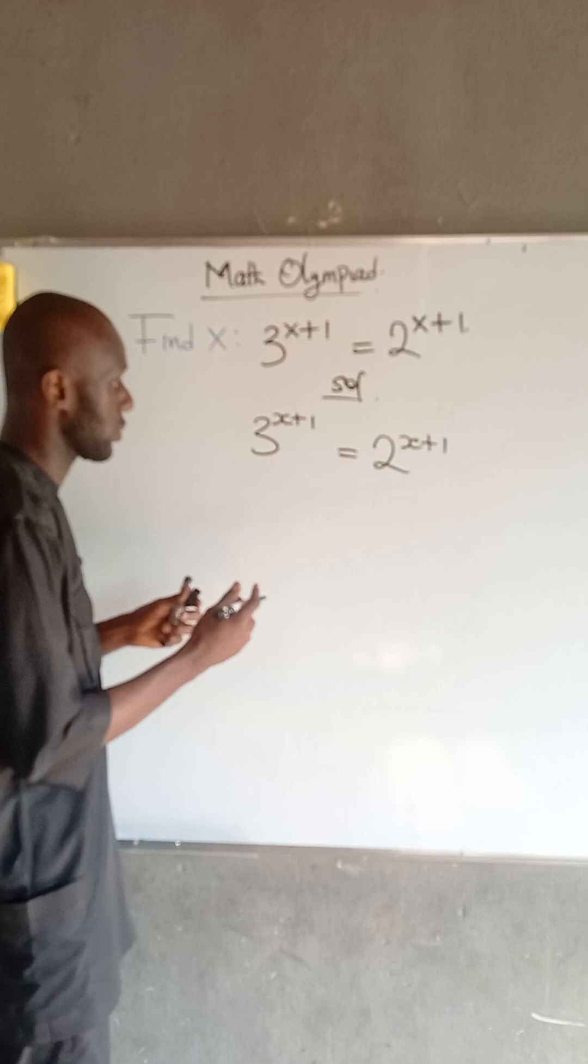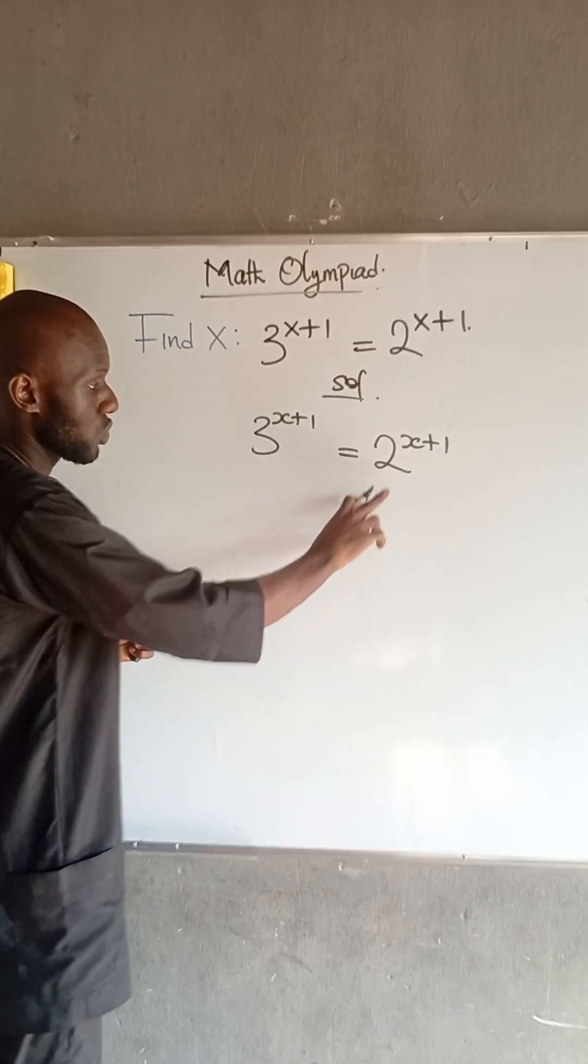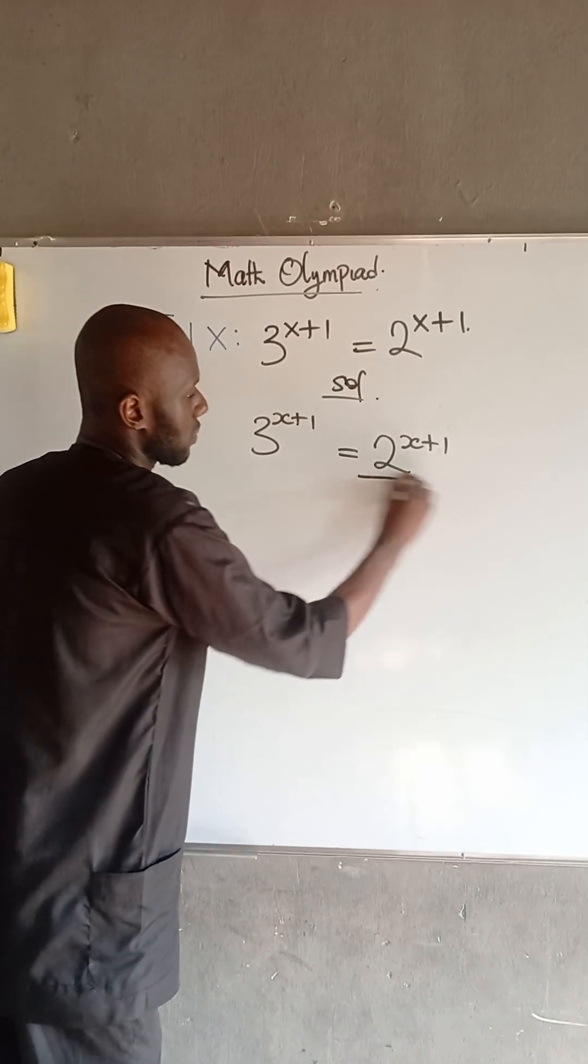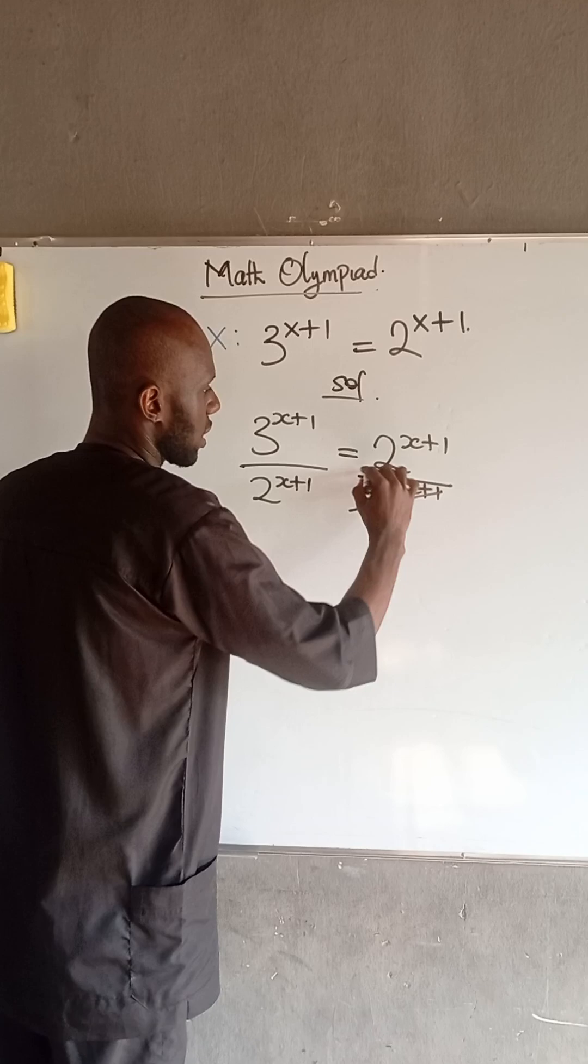The first thing we do here is we are going to divide both sides by 2 raised to the power of x plus 1. So at this point, this can cancel out.